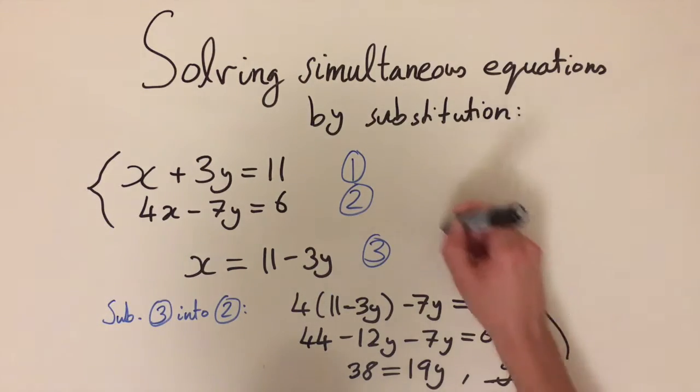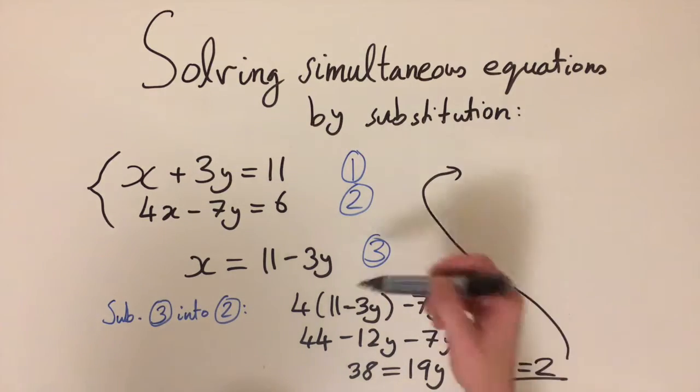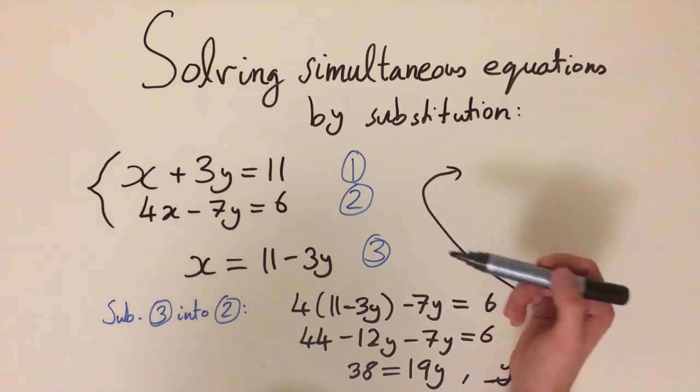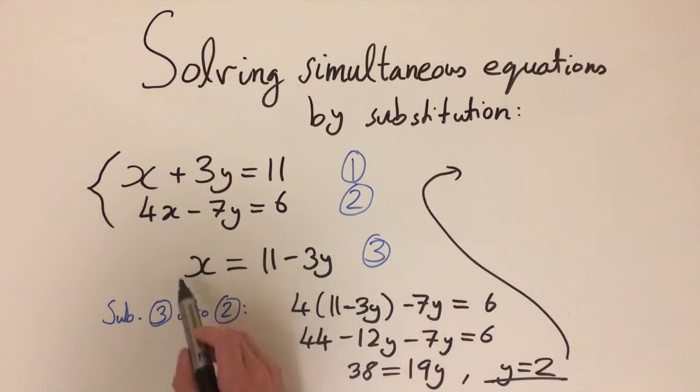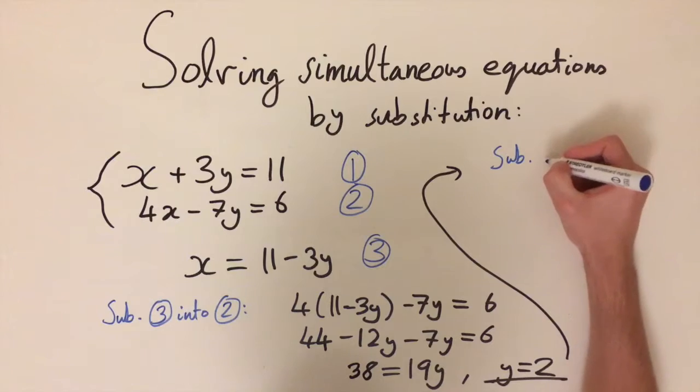Let's go back up here for some more space. Now the second task is to find out what the corresponding value of x is. We're going to do this by substituting y equals 2 into any of these equations. It doesn't matter which one, but we've already got x rearranged on its own, so this is the easiest form. We're going to substitute y equals 2 into equation 3.